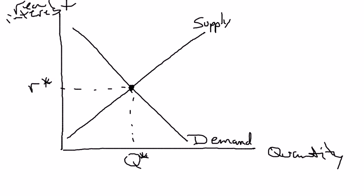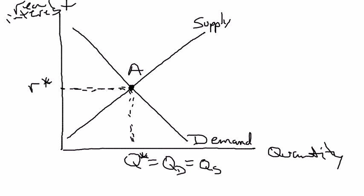Just to emphasize that — I know this is something from micro, but it's very important. If R star is the price and I wanted to find quantity demanded, I would go from R star over to my demand curve, which happens to be at point A, and down to get quantity demanded. Similarly, for quantity supplied, I'd go from R star over to the supply curve, which also happens to be at point A, and down. What's special about equilibrium is that quantity demanded equals quantity supplied.